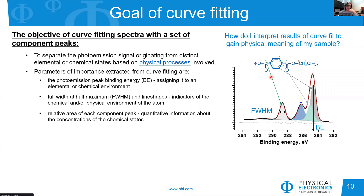So what is the goal of curve fitting? The goal of curve fitting is to separate the photoemission signal from distinct elemental and chemical states based on physical processes — and this is the key. We don't do curve fitting just to fit a mathematical number of components to represent the best mathematical fit; we do it to extract information based on physical processes.